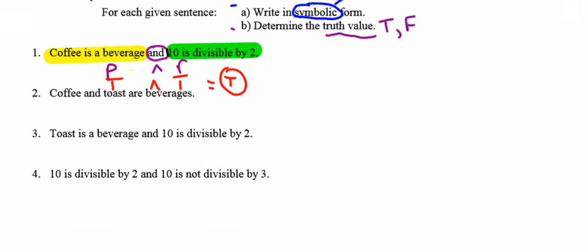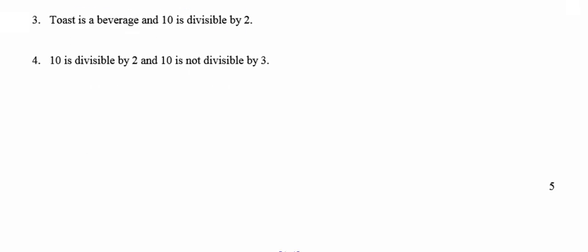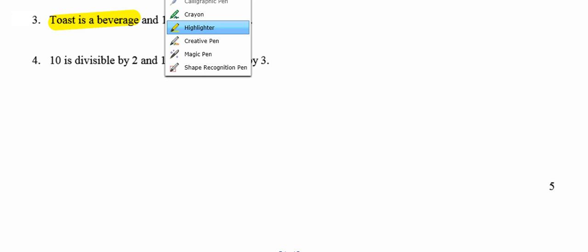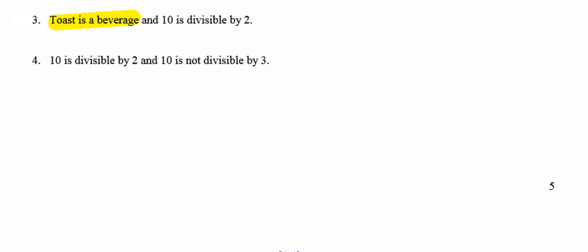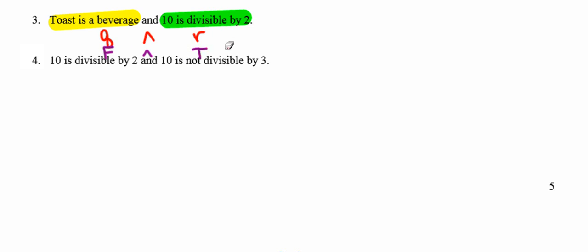Number 3: 'Toast is a beverage and 10 is divisible by 2.' Symbolically, 'toast is a beverage' is Q, connected by the 'and' symbol, and '10 is divisible by 2' is R — giving us Q ∧ R. For the truth value: Q is false and R is true. The conjunction can only be true if both are true. They are not both true, so the conjunction is false.